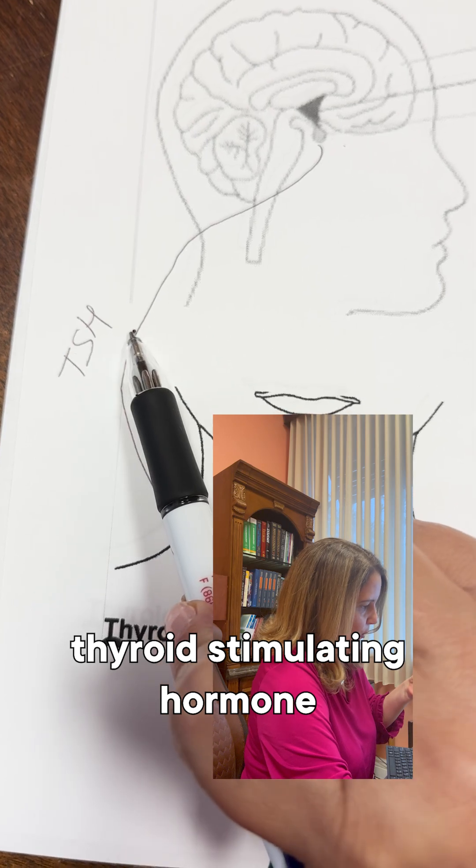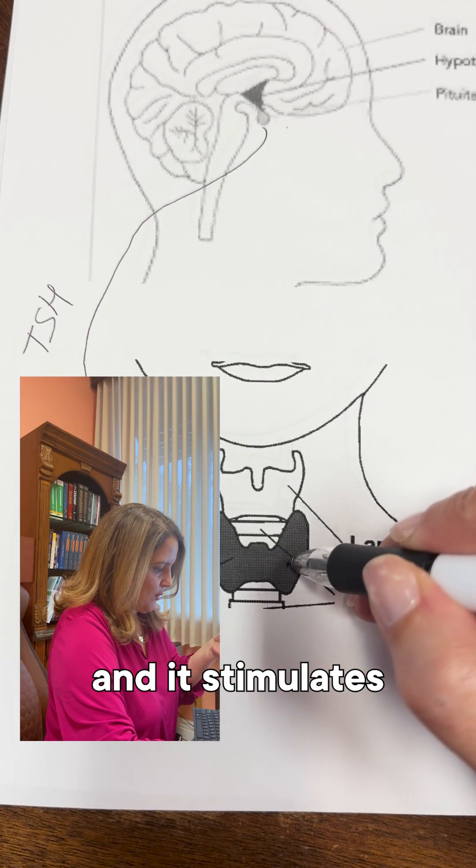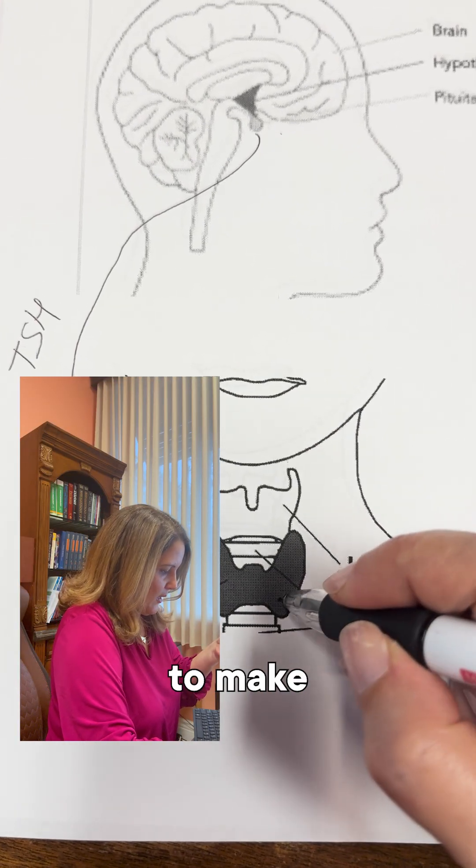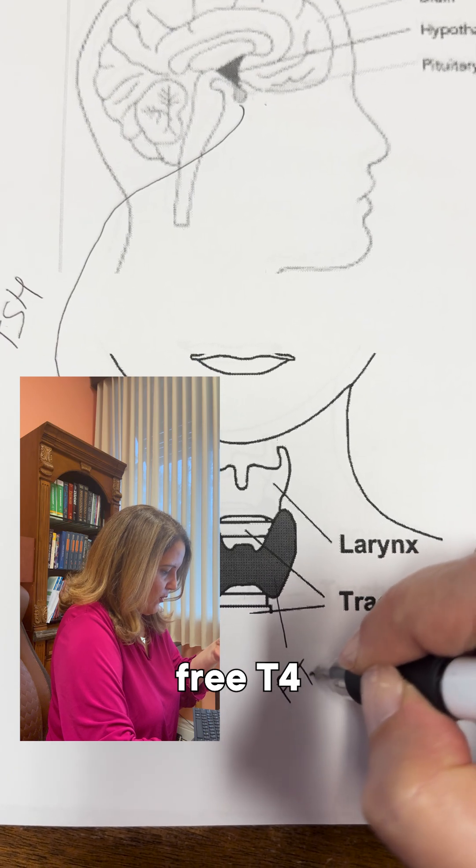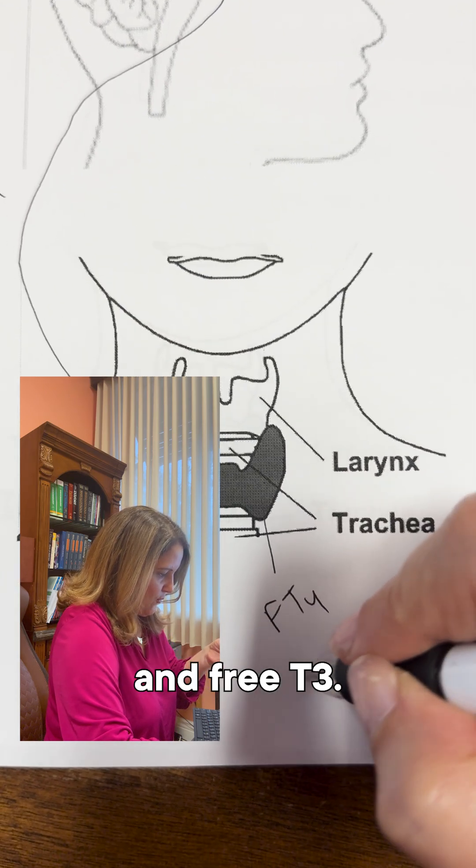Thyroid stimulating hormone, or TSH, stimulates the thyroid gland to make free T4 and free T3.